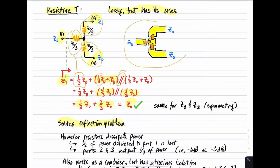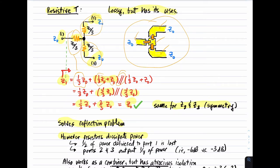In microstrip this would be implemented with microstrip lines of characteristic impedance Z₀ coming together through chip resistors at a common point, each chip resistor having value Z₀/3. By symmetry, this is also reflectionless at ports 2 and 3 — any exchange of port numbers gives the same performance. The downside is it's lossy because the resistors dissipate power. Specifically, one-half of the power delivered to port 1 is lost. If you deliver one watt into port 1, port 2 will see a quarter watt and port 3 will see a quarter watt — the output ports are 6 dB down as opposed to 3 dB down for lossless division.